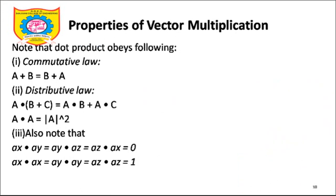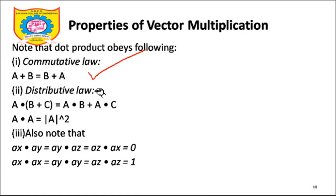Now let's look at some of the properties of the dot product. Dot product is very easy to understand. It is commutative. Commutative property: A plus B equals B plus A. So A dot B equals B dot A — that's the commutative nature. Dot product is also distributive.